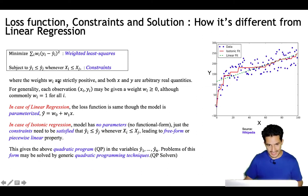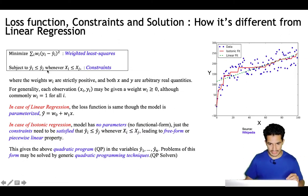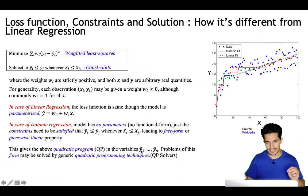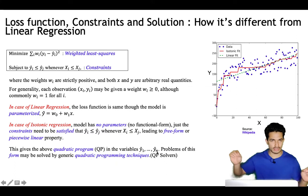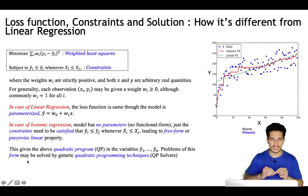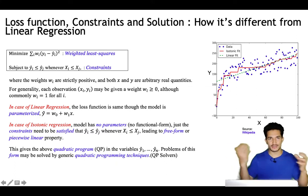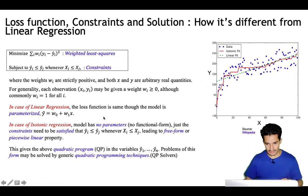Having a loss function with constraints to be satisfied leads to a quadratic program in the variables ŷ1 through ŷn. Problems of this form may be solved using quadratic programming techniques, and there are QP solvers available that we can use to solve this kind of constrained optimization problem.